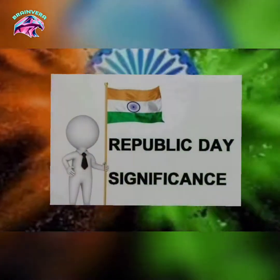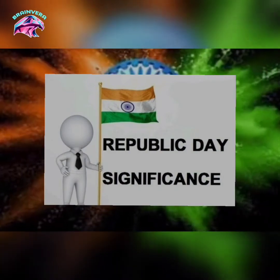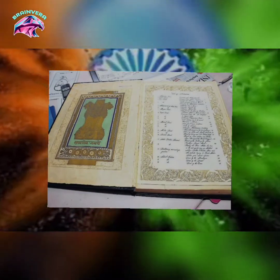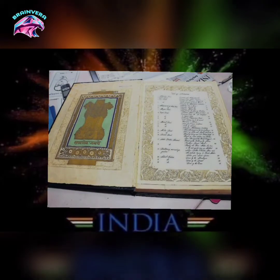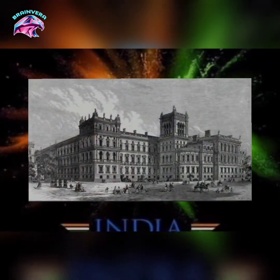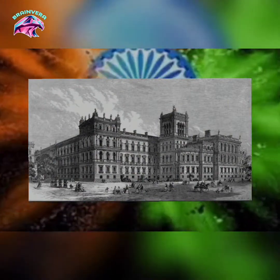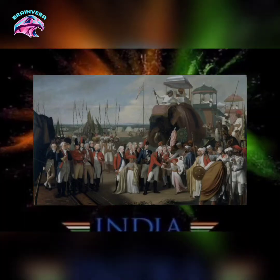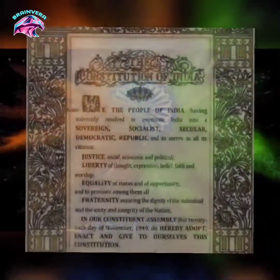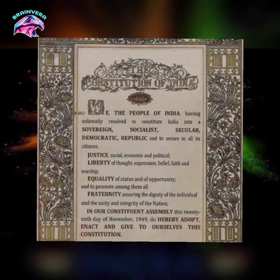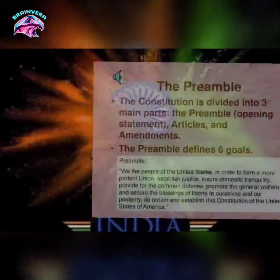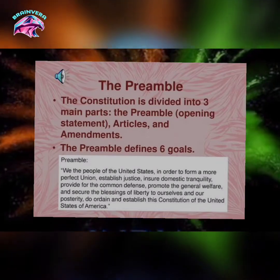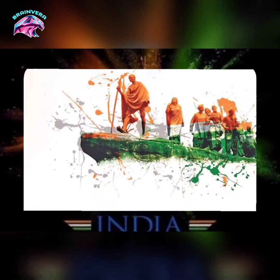Now we are going to talk about the significance of Republic Day. India's constitution, which was formally adopted in 1950, replaced the British colonial Government of India Act of 1935 as the country's governing text. On January 26th, 1950, the preamble to the constitution of India — a statement presenting the key principles of the constitution — came into effect. This completed the country's transition to a sovereign republic.